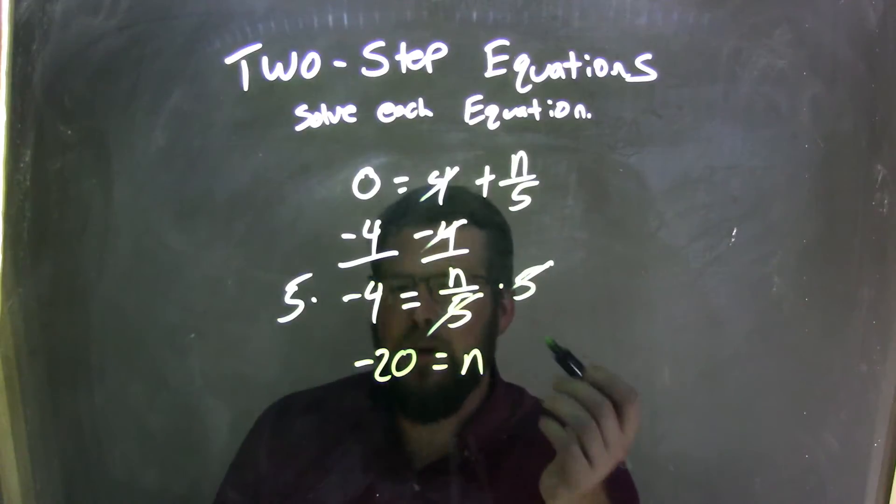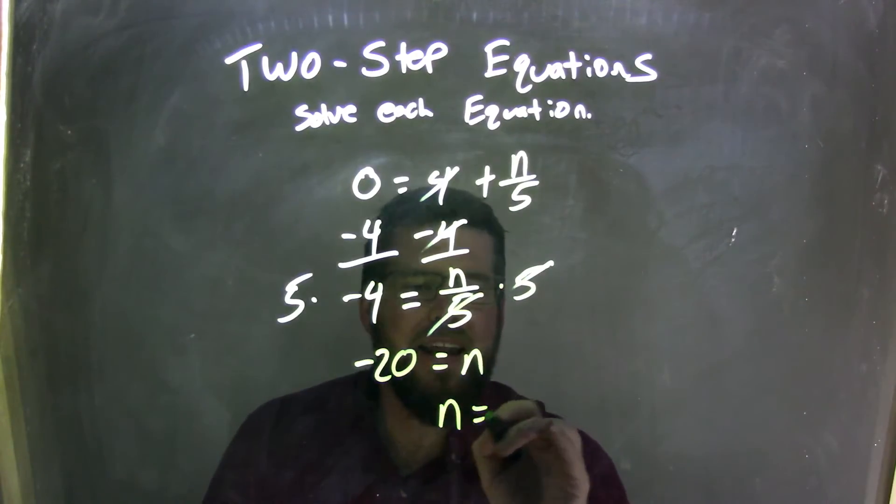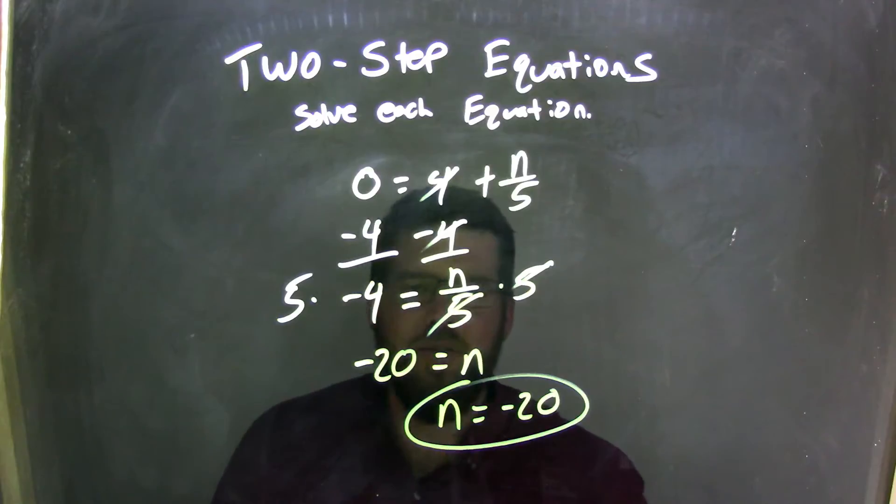Well, I have negative 20 equals n. Let's make it nice and neat. n equals negative 20, and that is my final answer.